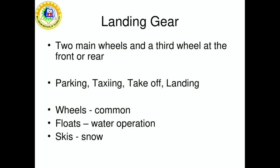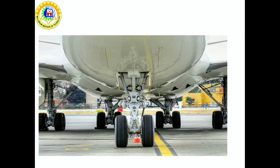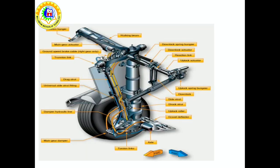Some aircraft carry fuel in the fuselage; others carry fuel in the wings. Landing gears are designed to support the aircraft while grounded and to withstand high loads during landing without any damage to its structure, while providing comfort to the passengers. Here we can see the complete schematic diagram of a landing gear.